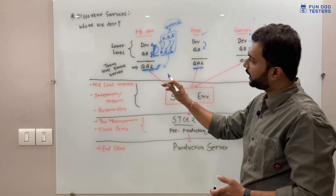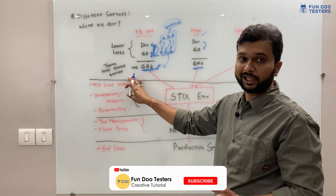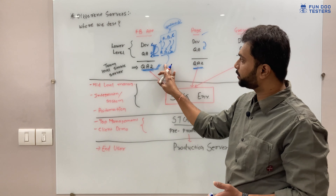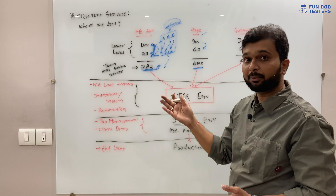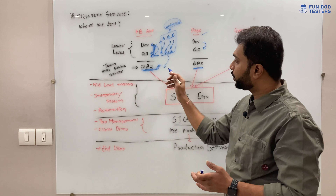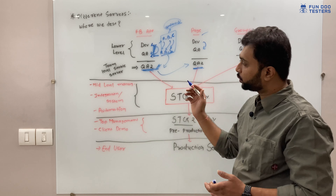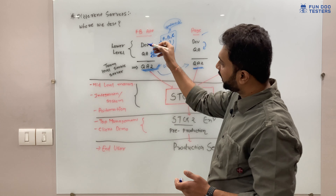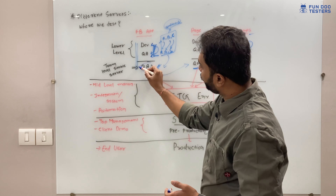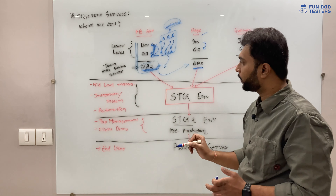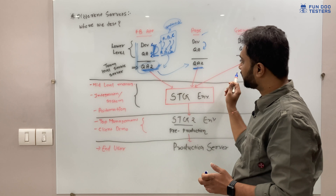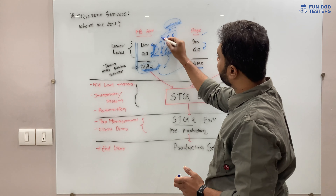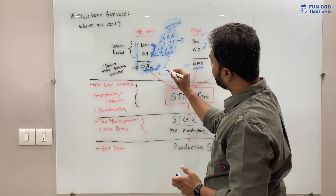The same process happens for different teams like page and groups. They use QA2 to demonstrate features to other teams - for example, the page team also relies on the Facebook application. They use QA2 for demos because at the lower level, QA2 is the most stable environment.